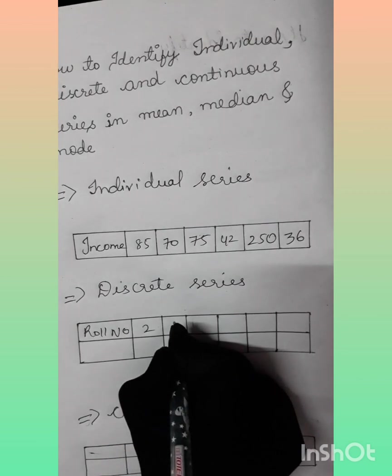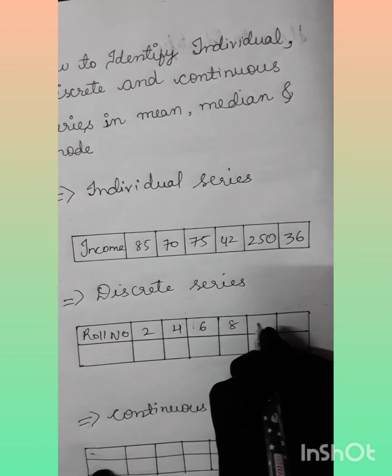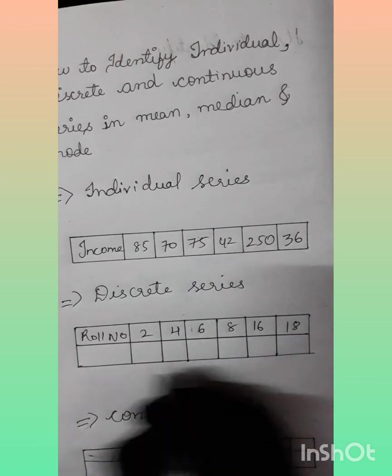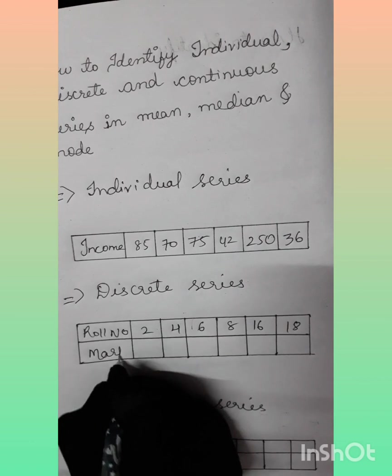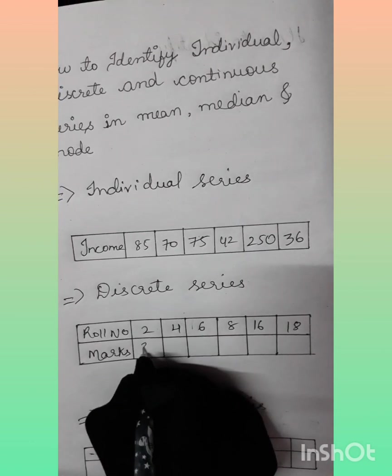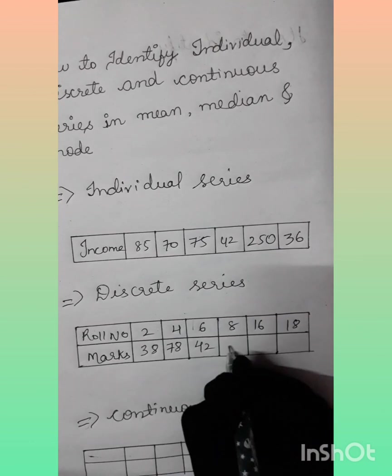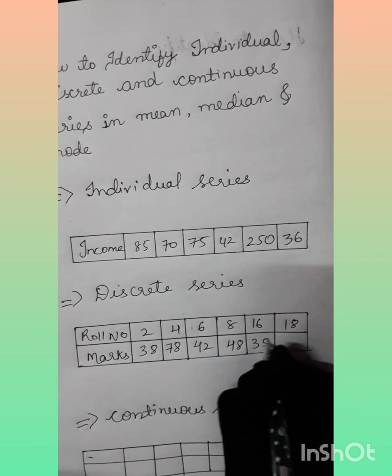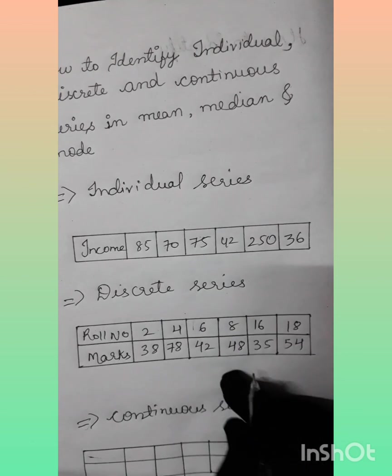In discrete series, what will be the formula for mean? Mean equals sigma fx by n. In my coming videos, I will show how to calculate mean, median, and mode. Here you can see there are two lines, which means this is a discrete series. It's very easy to understand: for individual, only one line.